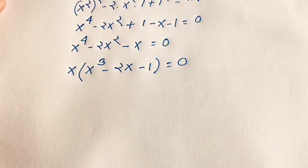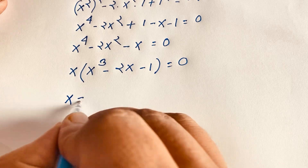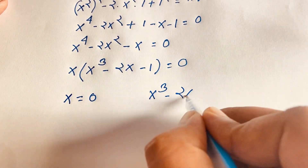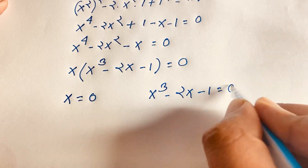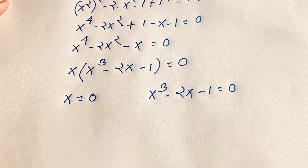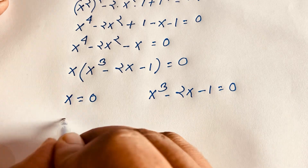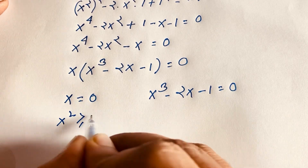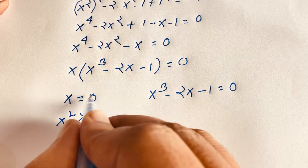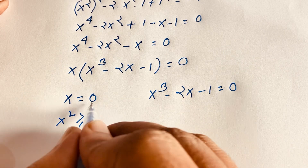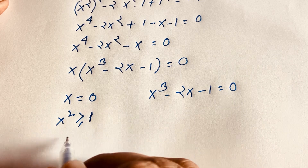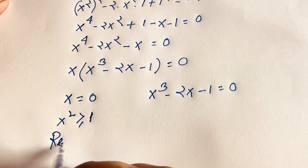We find two cases. The first case is x equals 0, and the other case is x cubed minus 2x minus 1 equals 0. But recall that x squared is greater than or equal to 1. If we use that constraint, x equals 0 does not satisfy x squared greater than or equal to 1, so x equals 0 is rejected.